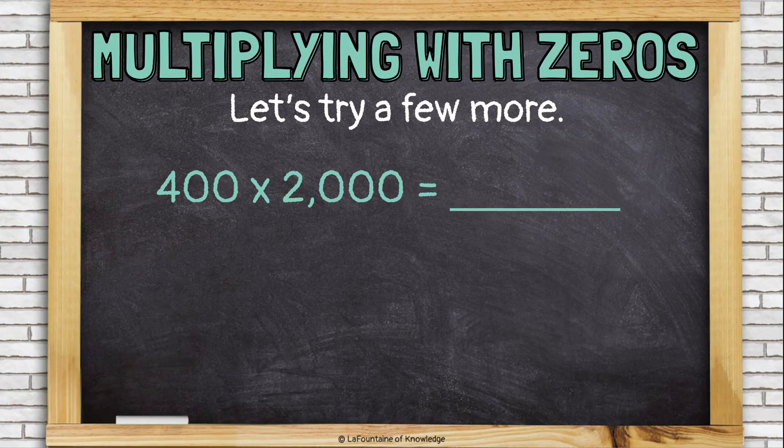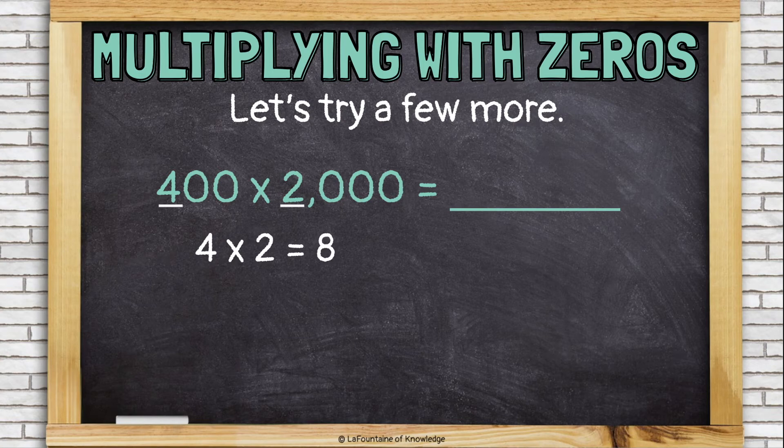Let's try a few more. Let's do 400 times 2,000. Remember, ignore the zeros and just multiply 4 times 2. That's 8.